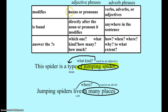Looking back at the chart, we know that nouns are modified by adjectives. So this whole prepositional phrase is doing the job of an adjective, describing the word 'type.'